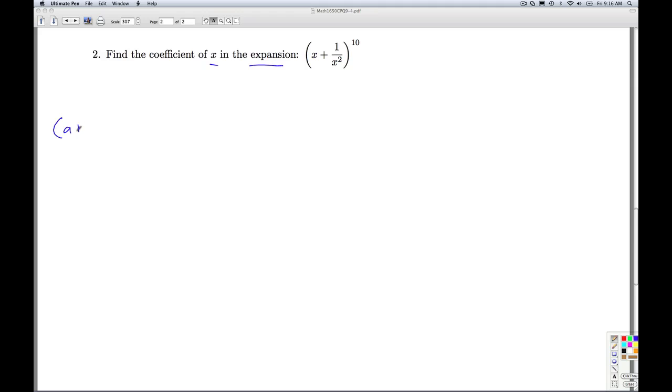The binomial theorem says if I want to take a plus b to the nth power, I get a sum of terms. The counter goes j equals 0 to n. n choose j, a to the n minus j power, b to the j power. This tells us exactly what the coefficients and terms are going to look like. So if I use that here, the n equals 10, the a is x, the b is 1 over x squared.